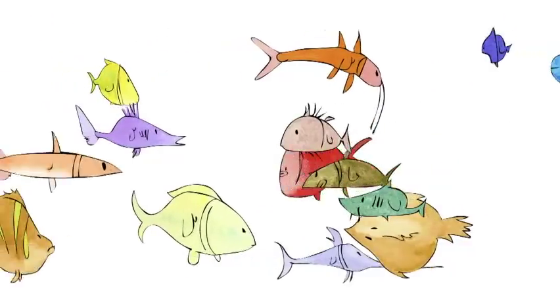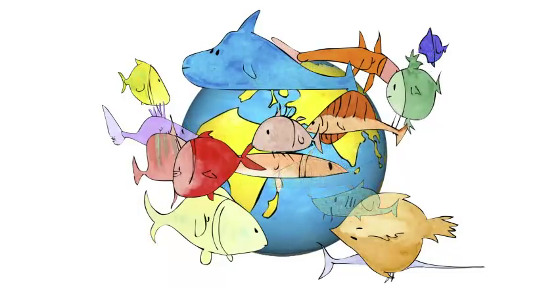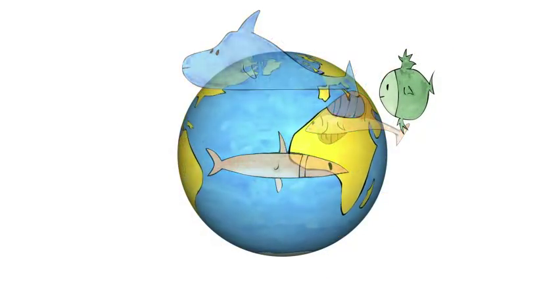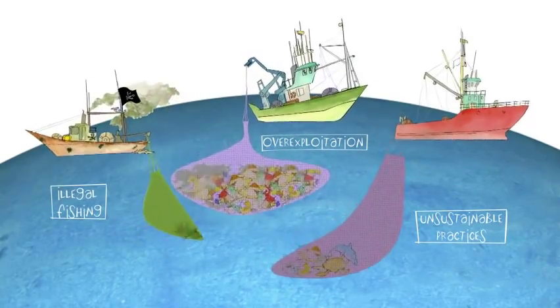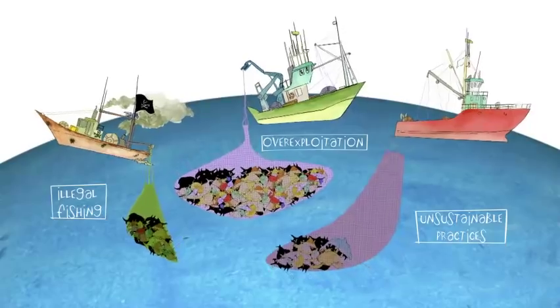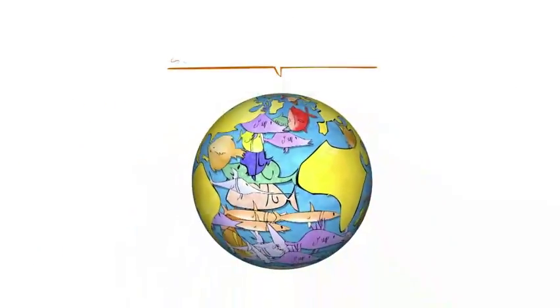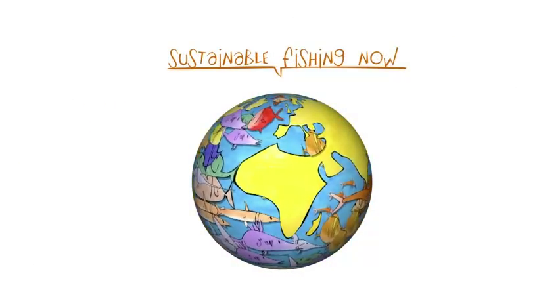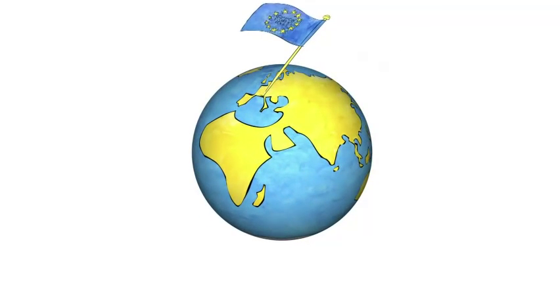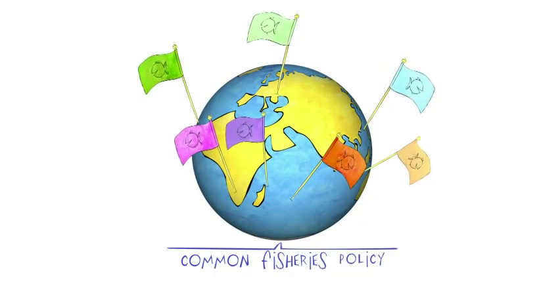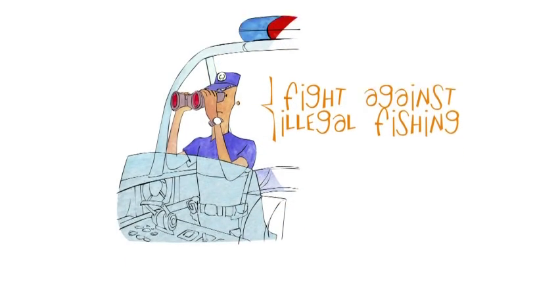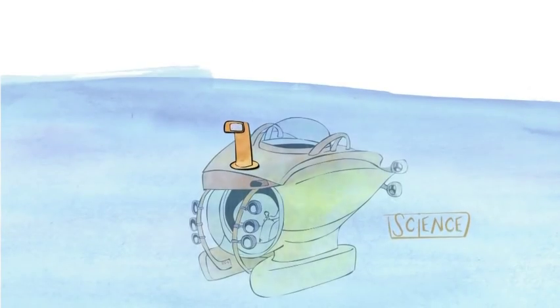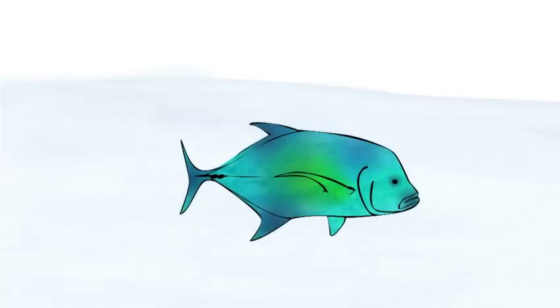Today many factors threaten the sustainability of world fisheries like over exploitation, unsustainable practices or illegal fishing. As the largest market in value and the largest donor of development aid, the EU is a key player in the fight against illegal fishing, supporting marine science and promoting market transparency.